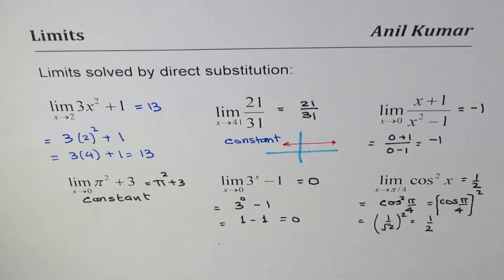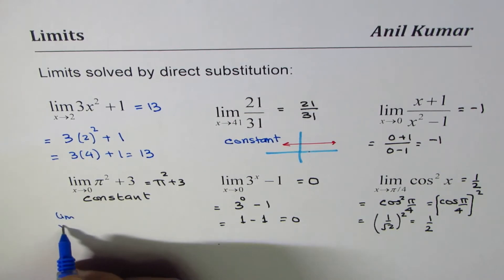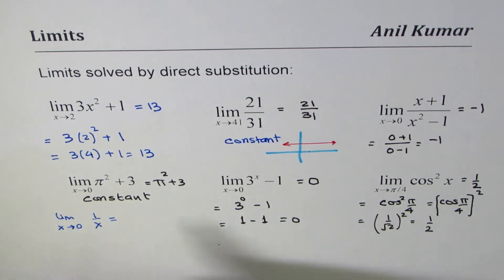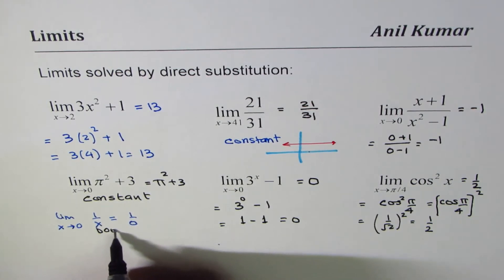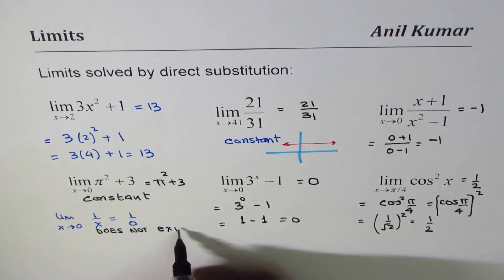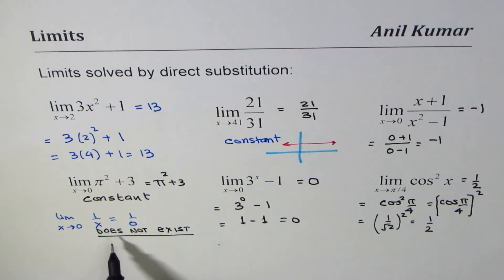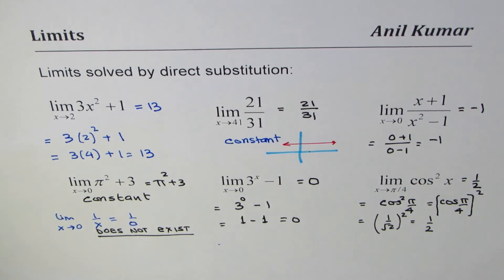Now if you have a question like this, which is limit x approaches 0 for 1/x, what we get here is if I substitute 0 I get 1/0. Now this is undefined, and for this particular case the limit does not exist. So sometimes even by direct substitution you may find that the limit does not exist. This is one of those cases. So this is very important to understand: limit may or may not exist, and at times you can find it by direct substitution.